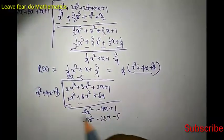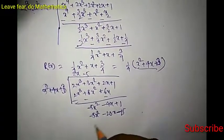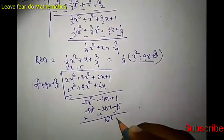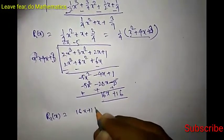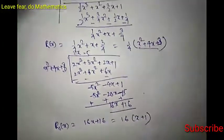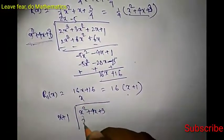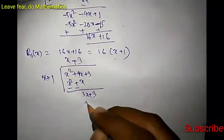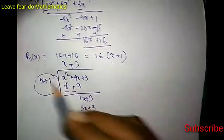After subtracting, the remainder is 16x + 16, which we write as 16(x + 1). Now we divide x² + 4x + 3 by x + 1. Multiplying gives x² + x; subtracting leaves 3x + 3. Then multiplying x + 1 by 3 gives 3x + 3, and subtracting gives remainder 0. So the highest common factor is x + 1.